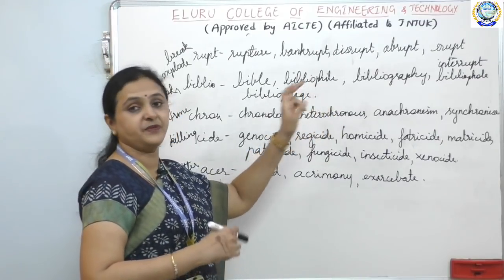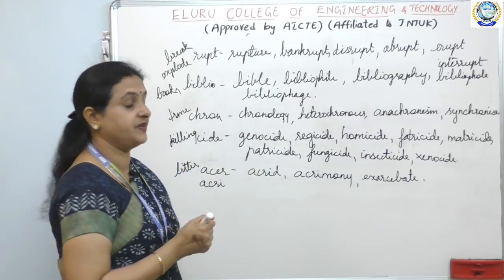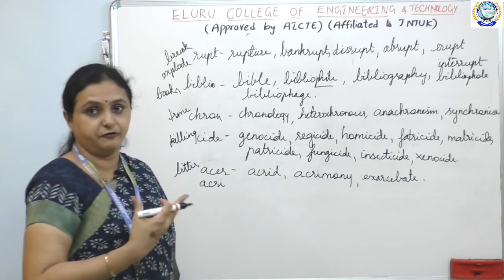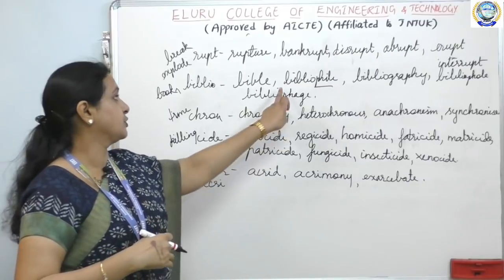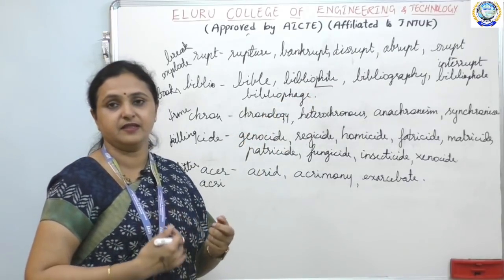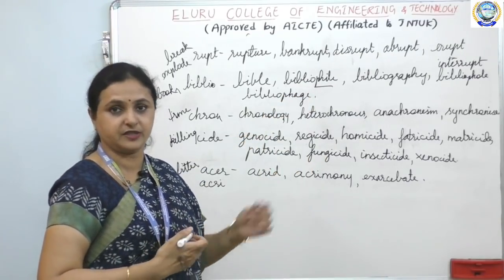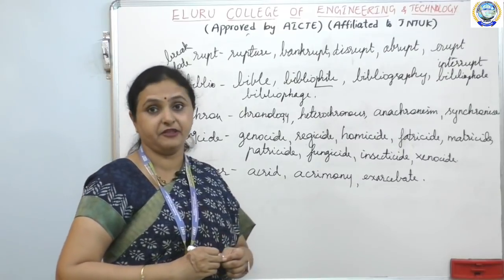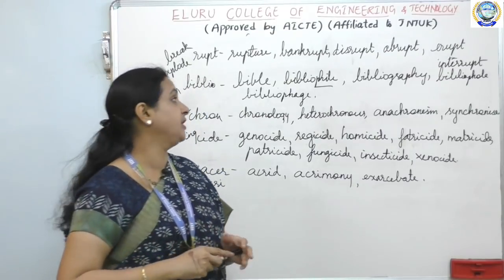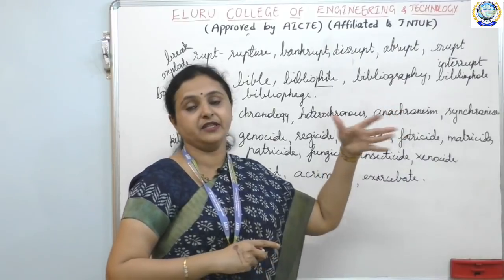Bibliophile — we learned that 'phil' means love, so bibliophile is a person who loves books. Bibliography — 'graphy' is writing, 'biblio' is book, so bibliography is a list of books written.